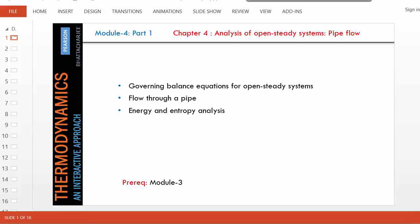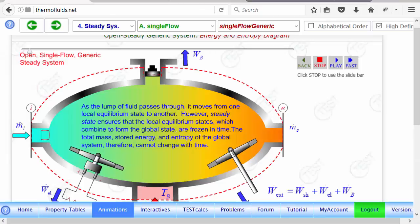So let's start with an animation of an open steady system. Notice the system is open, the flow can go in or out to this inlet and exit. We have flow going in, flow coming out, so therefore this is an open system.